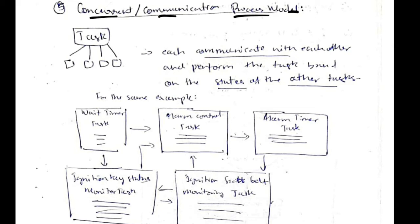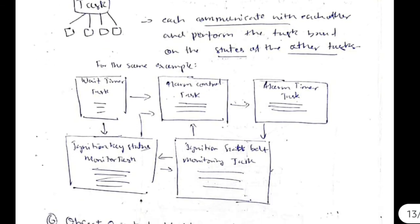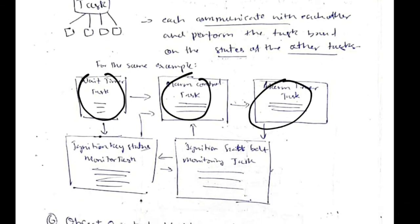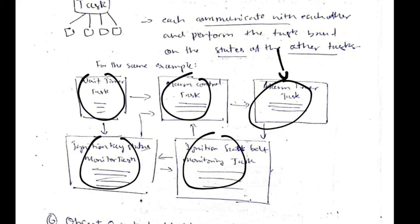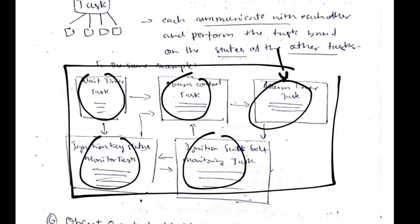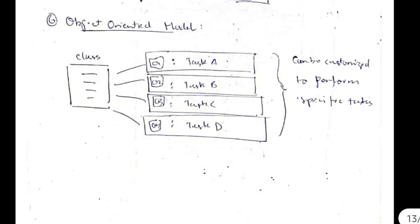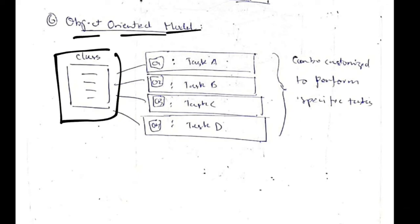The fifth is the concurrent communication process model — same as the sequential model, but the task is divided into many subtasks. Each subtask communicates with the others and performs tasks based on other tasks' states, achieving a common goal through effective communication.